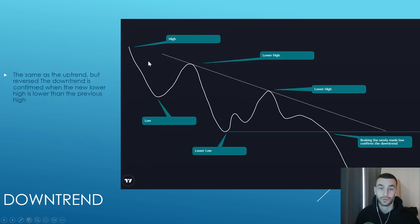When price is in a downtrend, it's absolutely the same, just the other way. You have a high, low, lower high, lower low, lower high. Breaking the newly made low confirms the downtrend. When you break this low, this is when you confirm the downtrend.